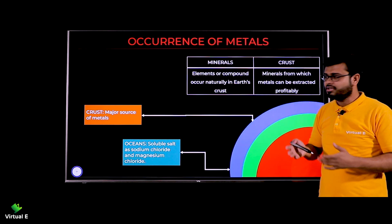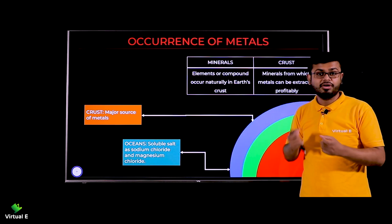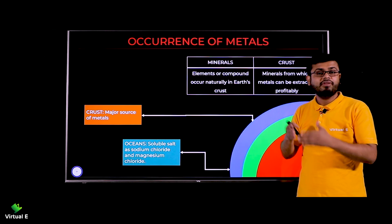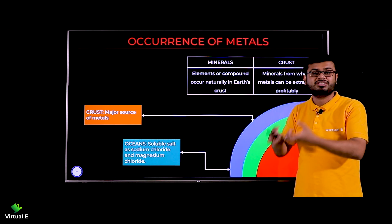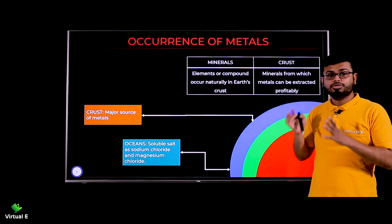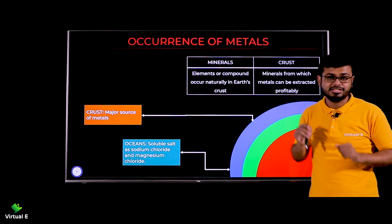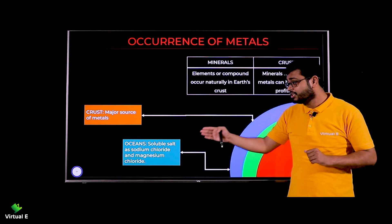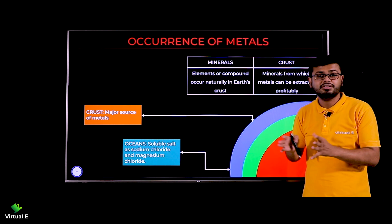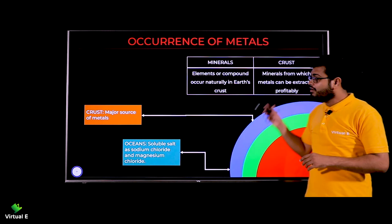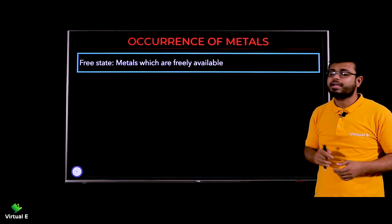All minerals are found in the crust; ores are also there. Ores are those from which we extract elements in the raw form. In the oceans, quite a few soluble salts are also found — for example, sodium chloride, magnesium chloride. We can find these kinds of minerals everywhere on Earth; our job is to find and extract them.